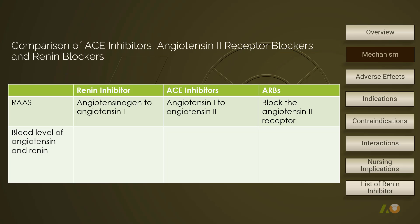So far, we have seen three different groups of medications working on RAS: renin inhibitor, ACE inhibitors, and angiotensin 2 receptor blockers. Here is a comparison chart of the therapeutic mechanisms among medications from these three groups. A renin inhibitor works at the first step of RAS, preventing angiotensinogen from converting into angiotensin 1. ACE inhibitors work on the second conversion, preventing angiotensin 1 from converting into angiotensin 2.